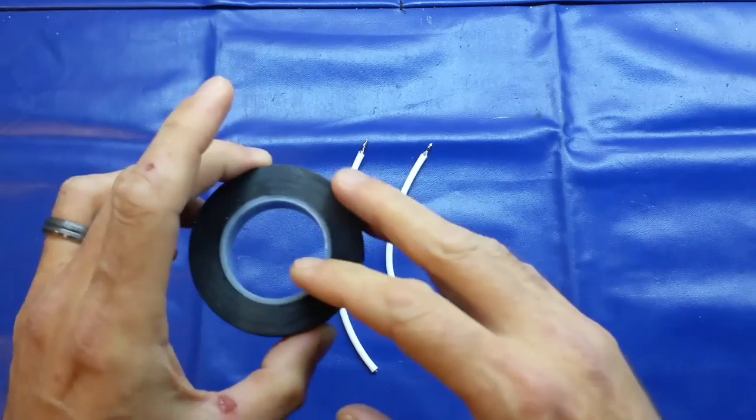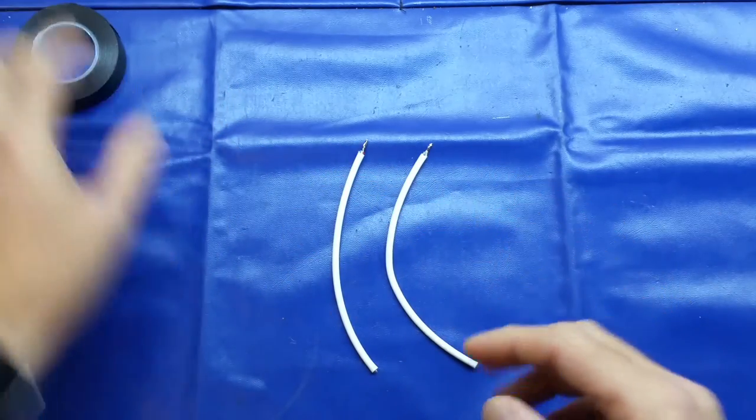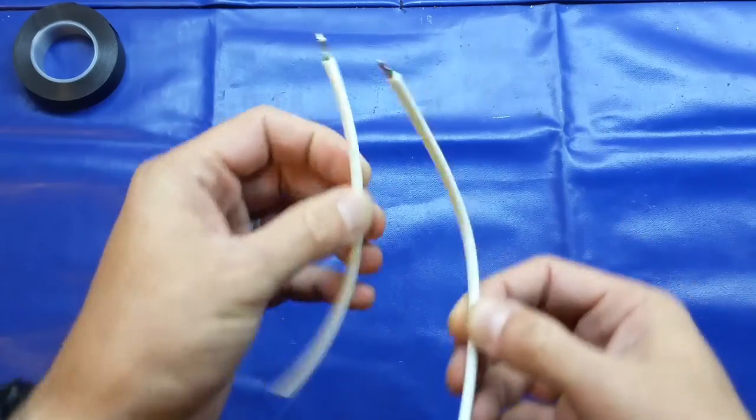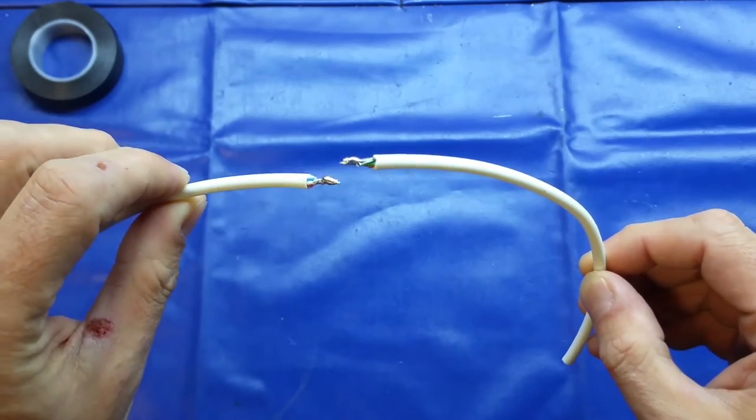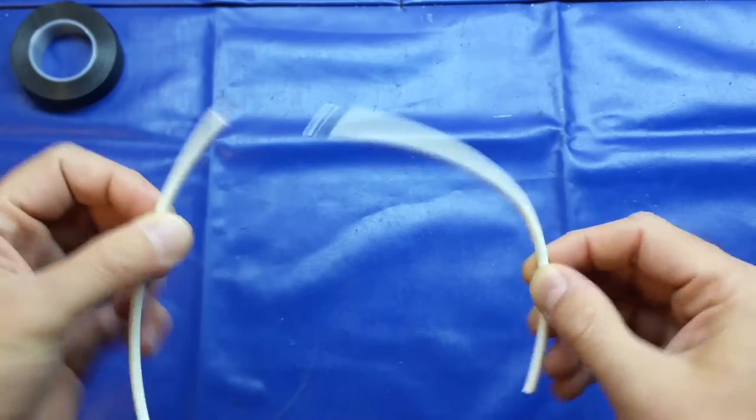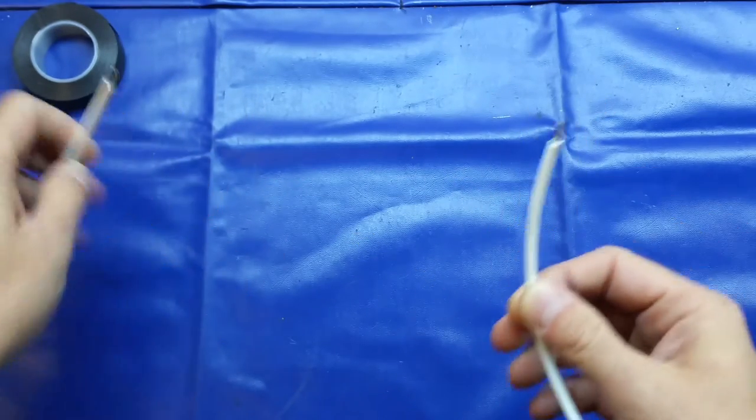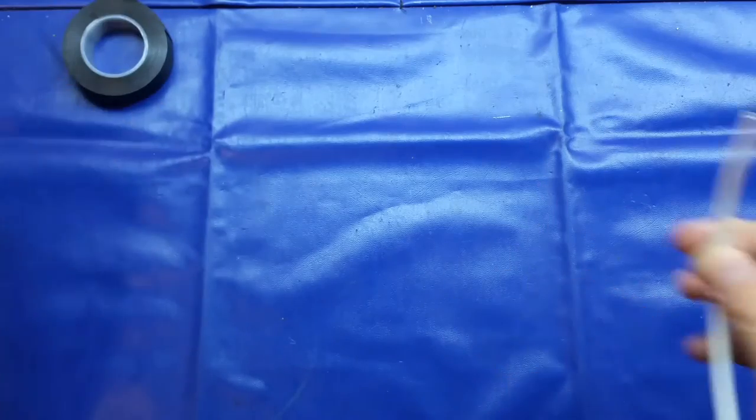I'm going to do a little demo. I've prepared this six-core alarm wire which I've twisted all the conductors together and applied a little bit of solder.